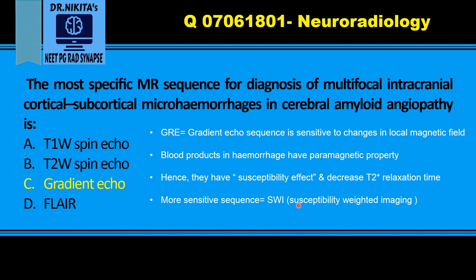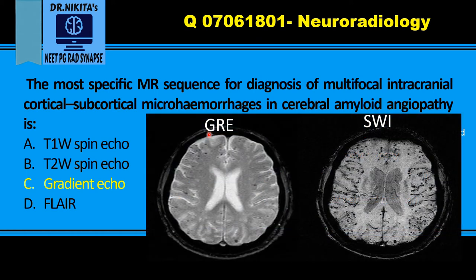Susceptibility means susceptibility effect — that is changed magnetic field due to blood products. SWI is more sensitive than GRE for hemorrhage. Looking at the images of gradient echo and SWI in this patient of amyloid angiopathy, these tiny black areas are the micro hemorrhages. We can see that in SWI, much more hemorrhages are seen as compared to GRE. Hence SWI is much more sensitive than GRE for micro hemorrhages.